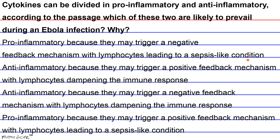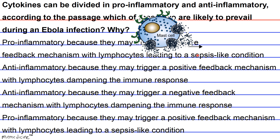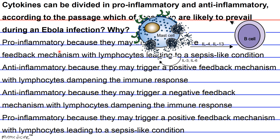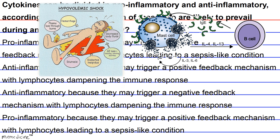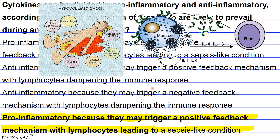The passage mentions fever, which is typical of the inflammatory response. Pro-inflammatory cytokines recruit more lymphocytes that eventually release more cytokines — a positive feedback loop. The passage also mentions hypovolemic shock, which is typical of sepsis. Hence, pro-inflammatory cytokines are likely to prevail and may trigger a positive feedback mechanism with lymphocytes leading to a sepsis-like condition. The answer is D.